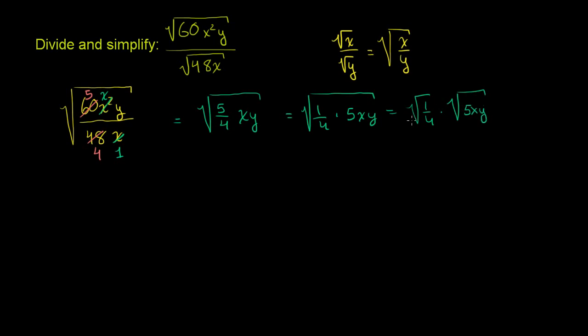And the square root of 1/4, if you think about it, that's just 1/2 times 1/2. Or another way you could think about it, you could just say this is 1/2. Or if you don't realize it's 1/2, you say this is the same thing as the square root of 1 over the square root of 4. And the square root of 1 is 1, and the principal root of 4 is 2. So you get 1/2 once again.